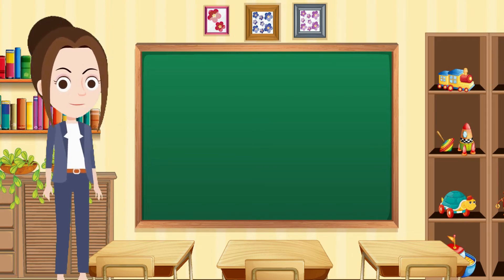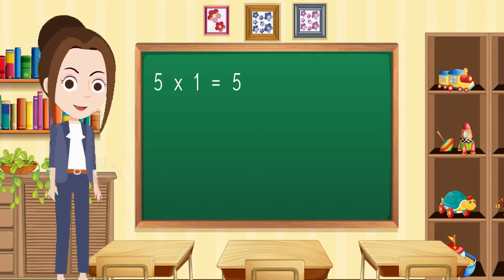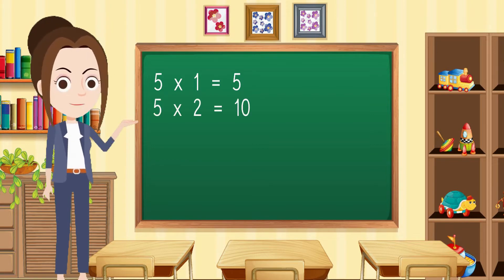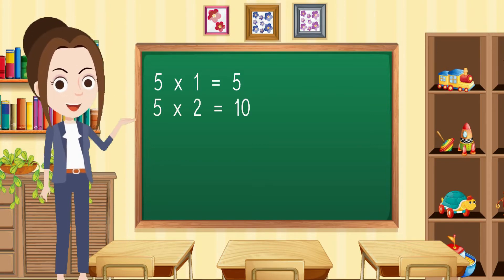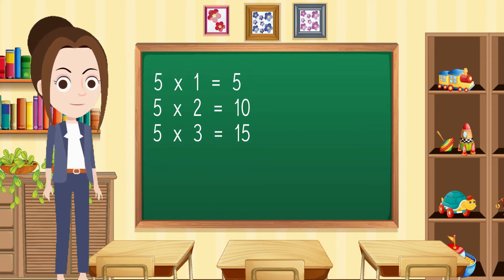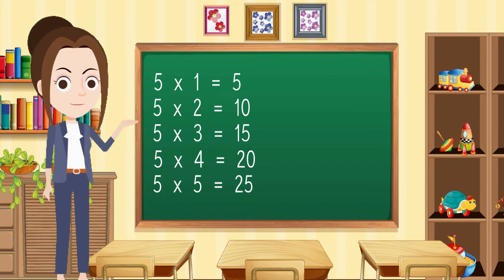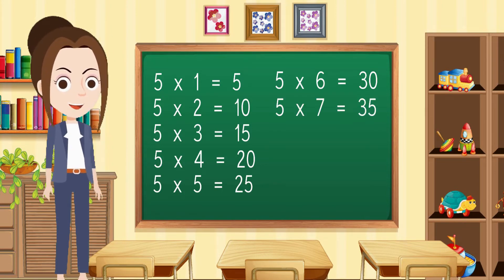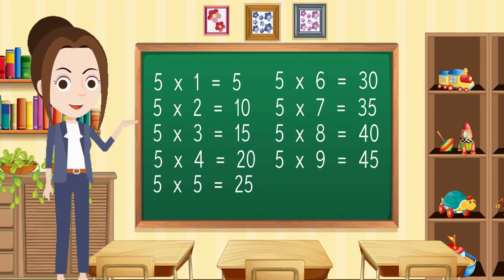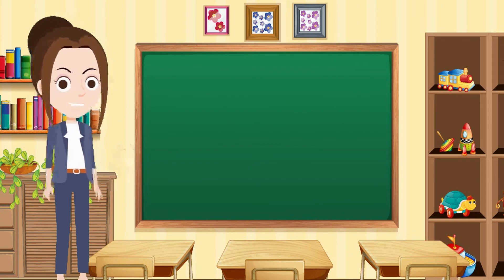Now repeat again. Five ones are five. Five twos are ten. Five threes are fifteen. Five fours are twenty. Five fives are twenty-five. Five sixes are thirty. Five sevens are thirty-five. Five eights are forty. Five nines are forty-five. Five tens are fifty.